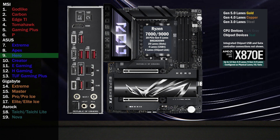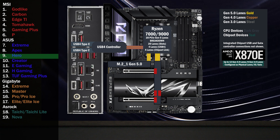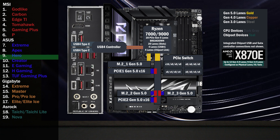Here's the Asus X870E ROG Hero. Four lanes go to the USB 4 controller, connecting two Type-C ports on the back. Four Gen 5 lanes go to the main M.2. Sixteen lanes at Gen 5 go to a PCIe switch connecting two x16 slots and two M.2s. This switch has four modes. If only the first x16 slot is used, all lanes go to that slot. If the second x16 is used, eight lanes go to the first and eight lanes go to the second.